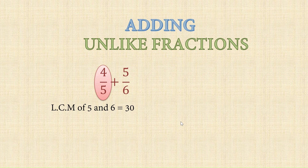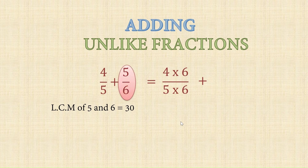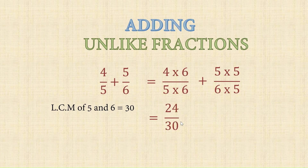For the first fraction, the denominator is 5. To make it 30, multiply both numerator and denominator by 6. For the second fraction, the denominator is 6, so multiply both numerator and denominator by 5. The first fraction becomes 24 upon 30 and the second is 25 upon 30. Now directly add the numerators: 24 plus 25 is 49. The answer is 49 upon 30.